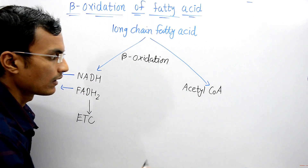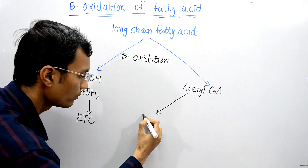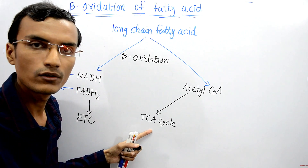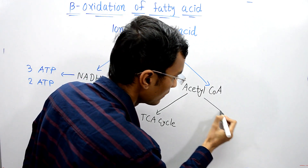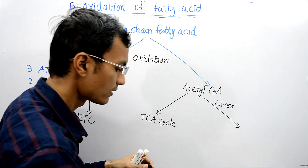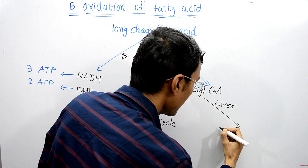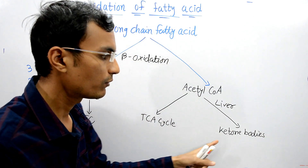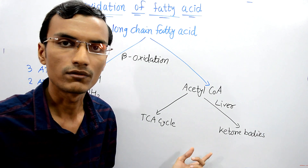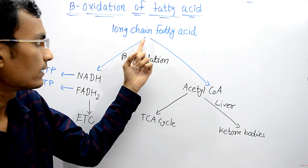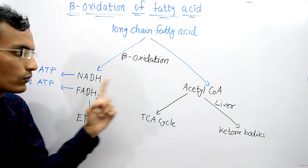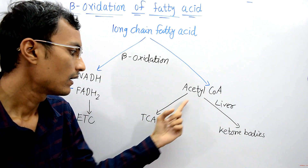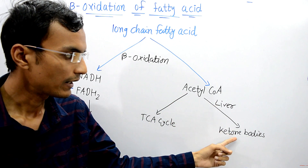The other product of beta oxidation is acetyl-CoA (acetyl coenzyme A). Acetyl-CoA can enter into the TCA cycle — that is, the Krebs cycle — to be completely oxidized and produce ATP. Inside the liver, acetyl-CoA can also be used to produce ketone bodies, which are water-soluble molecules that can be used by the brain and other tissues where glucose is not available.